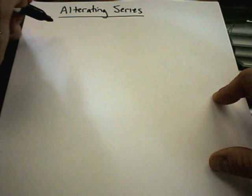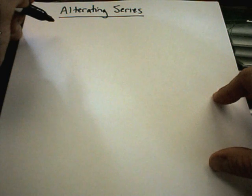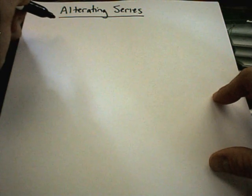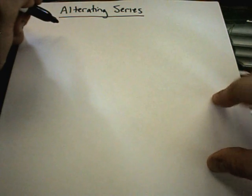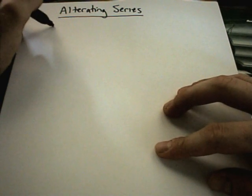So the next type of series we're going to discuss are what are called alternating series. And alternating series are probably about the easiest of all the series to deal with, just because the test to show convergence or divergence is relatively straightforward. So again, an example of an alternating series